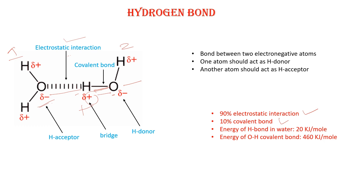A hydrogen bond is a bond between two electronegative atoms — here both are oxygen — which is bridged by a hydrogen atom. One atom acts as a hydrogen donor and one acts as a hydrogen acceptor. This oxygen is acting as a hydrogen donor and the other oxygen is acting as a hydrogen acceptor. So hydrogen bond is a bond formed between two electronegative atoms bridged by a hydrogen atom.